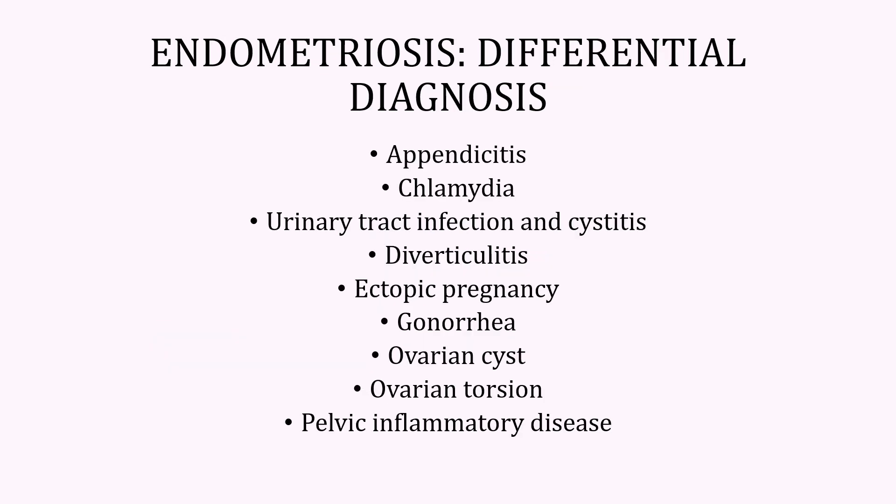A number of different conditions may be confused with endometriosis and are part of the differential diagnosis. These include appendicitis, chlamydial infection, urinary tract infection and cystitis, diverticulitis, ectopic pregnancy, gonorrhea, ovarian cyst torsion, and pelvic inflammatory disease.